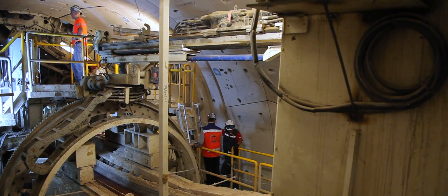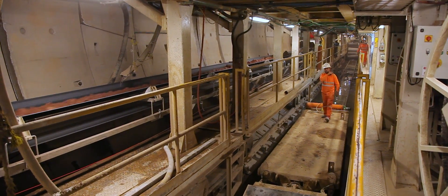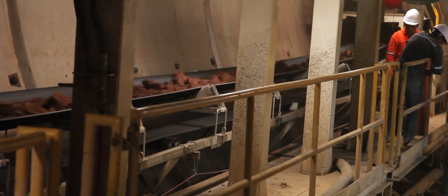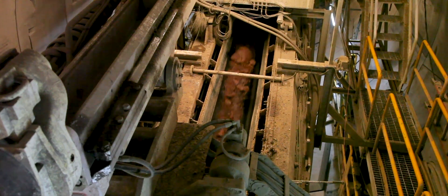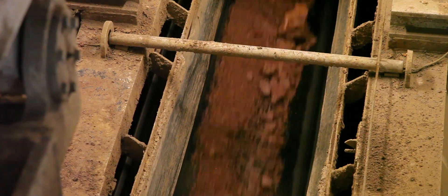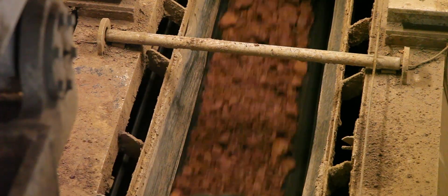Standing for a crossover between rock and EPB, the XRE is a type of crossover TBM that has been supplied by Robbins on multiple projects that feature sections of both hard rock and soft ground, using features of both EPB and single shield hard rock machines.